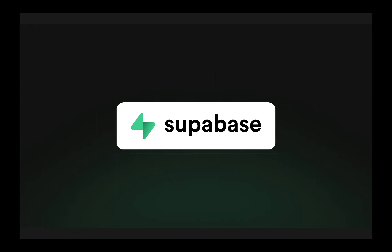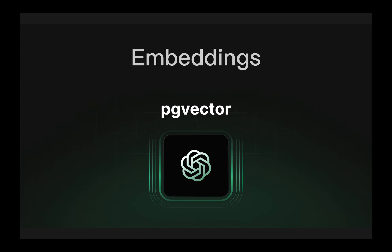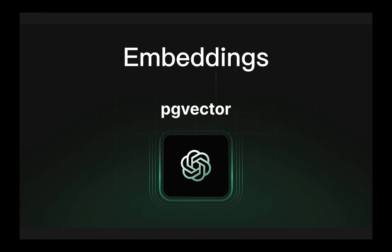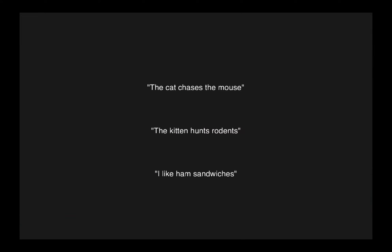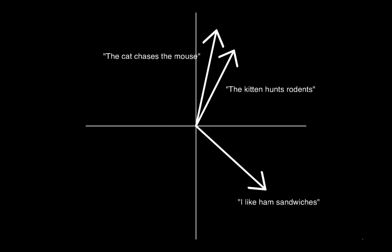Supabase has support for PgVector, which can be used to store OpenAI embeddings. What are embeddings? Embeddings are vector representations of text strings, and they can be used to determine how similar two texts are. Two texts are similar if their embeddings are close to each other, and they are not so similar if their embeddings are far apart.